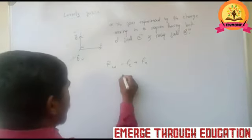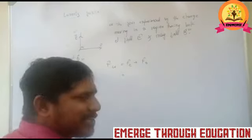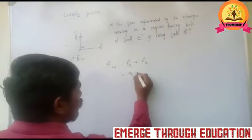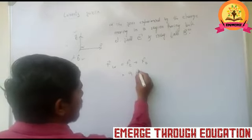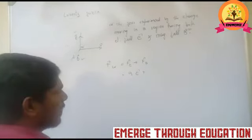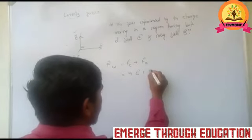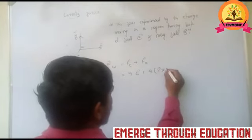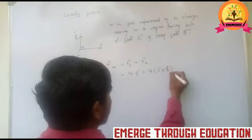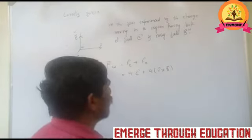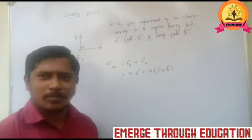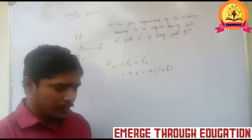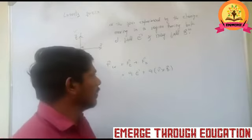The force due to the electric field is Q into E, and the force due to the magnetic field is Q into V cross B. The expression for the magnetic force F_B is equal to Q into V cross B, as derived in the previous class.